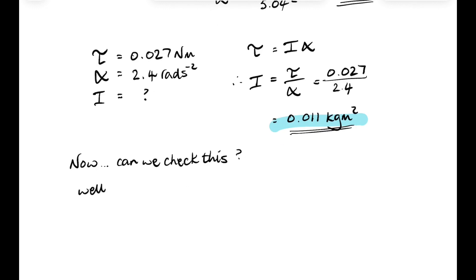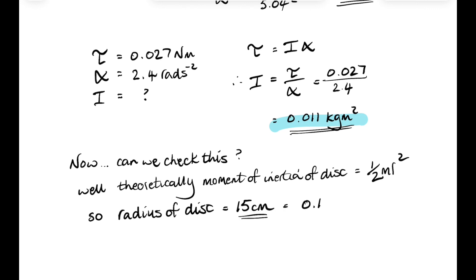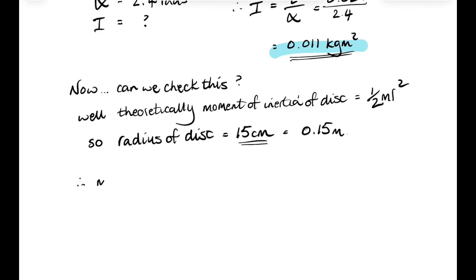Now can we check this? Well, theoretically the moment of inertia of a disk is a half mr squared. And the radius of our disk was 15 centimeters or 0.15 meters. So the mass of the disk should be, if we rearrange the moment of inertia relationship, then 2i over r squared should be equal to the mass.